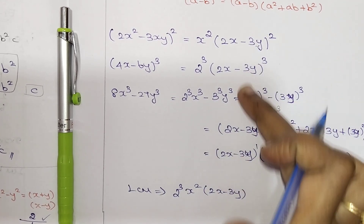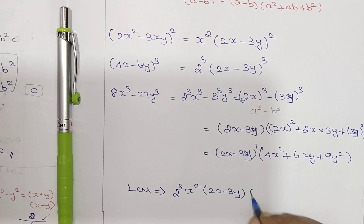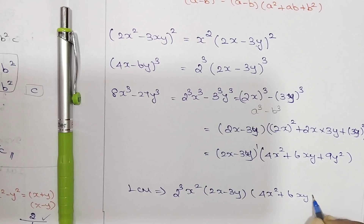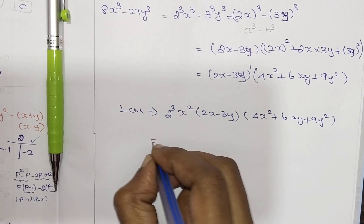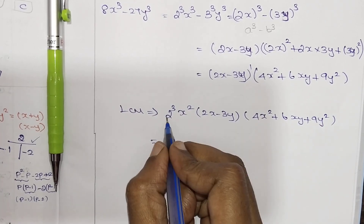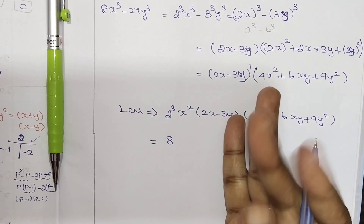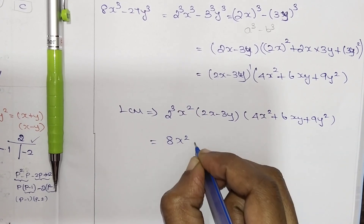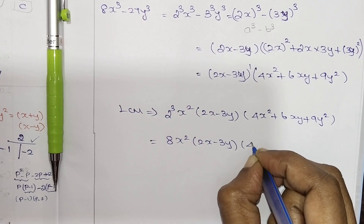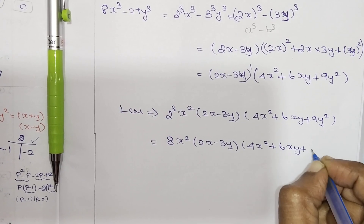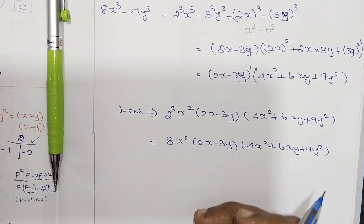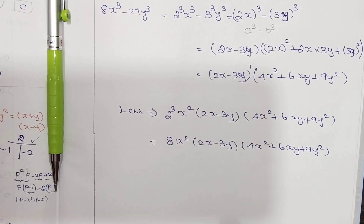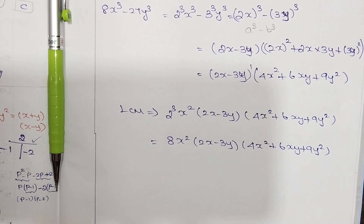So 2x-3y is present in all three terms. The highest power is cube. The LCM is: (2x-3y)³ × (4x²+6xy+9y²). So in 10th standard, we will finish Exercise 3.2. We will meet in the next class. Thank you.